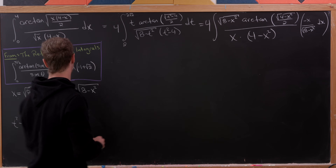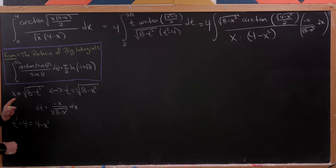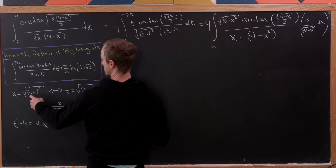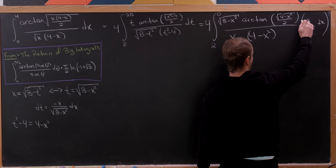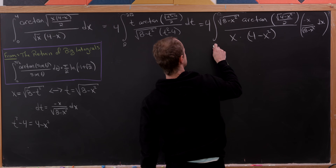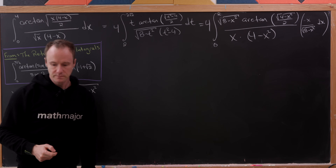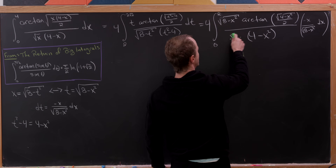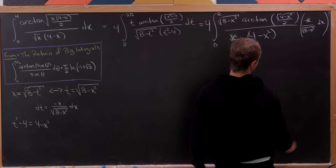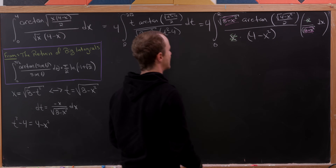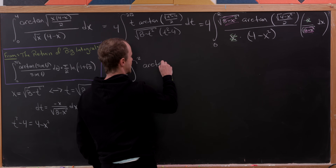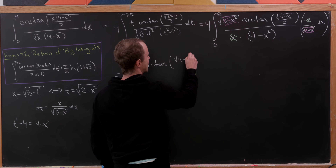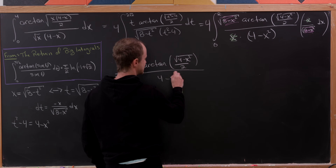After substitution, significant cancellation occurs: the x terms cancel and the √(8 − x²) terms cancel. We're left with four times the integral from zero to two of arctan(√(4 − x²)/2) / (4 − x²) dx.